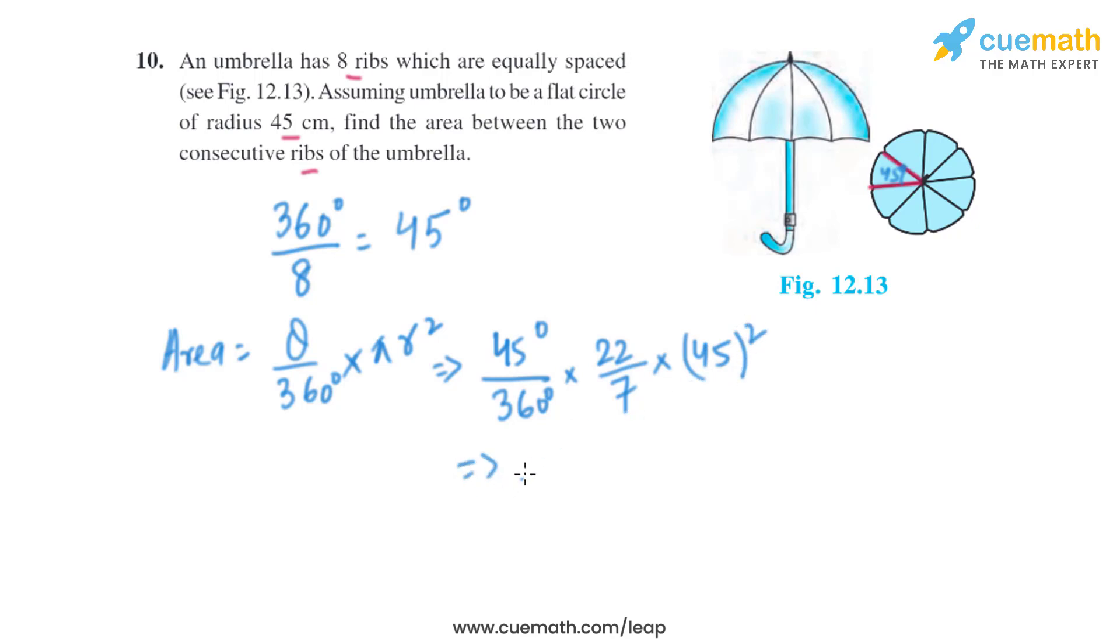On solving this, we'll get the area as 22275 divided by 28 square centimeters. So we'll get the area between the two consecutive ribs of the umbrella as 22275 divided by 28 square centimeters.